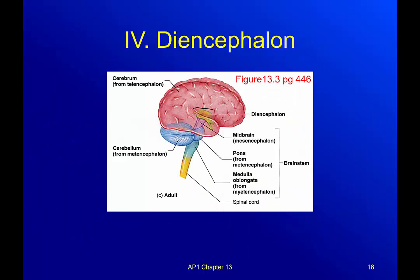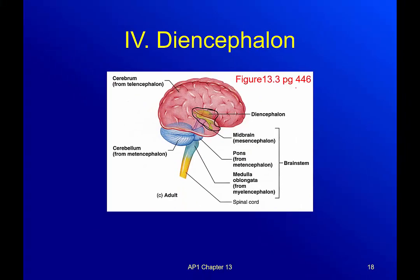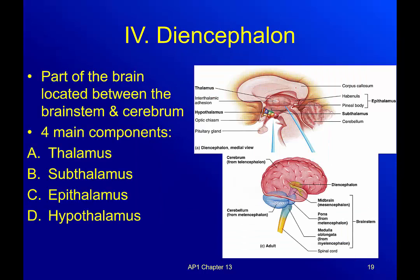Now the diencephalon — this green structure visible here — is part of the brain located between the brain stem and the cerebrum. Imagine a tootsie pop: the center is kind of where everything is before you get to the cerebrum, the big pink part on top. It has four main components: the thalamus, the subthalamus, the epithalamus, and the hypothalamus.